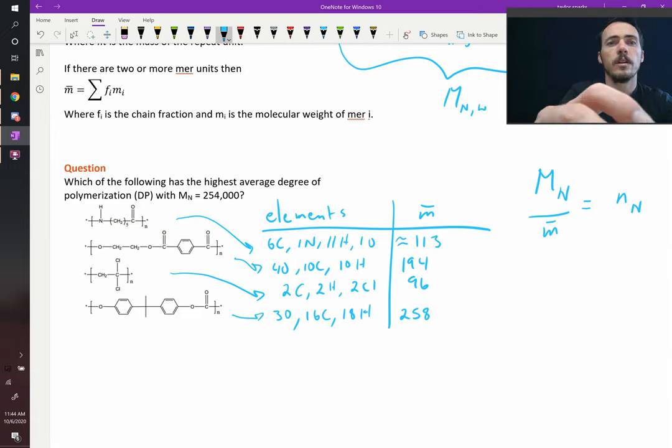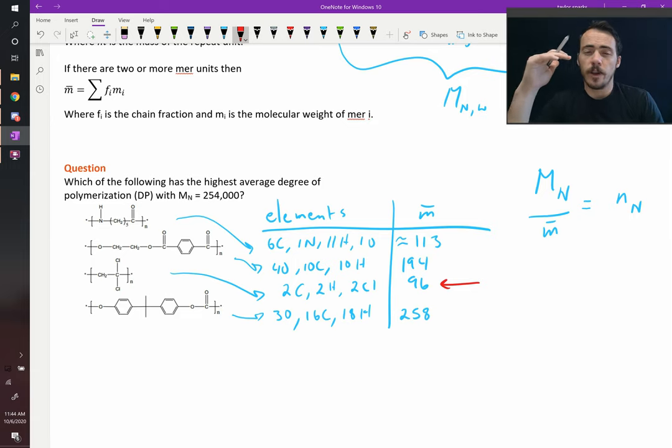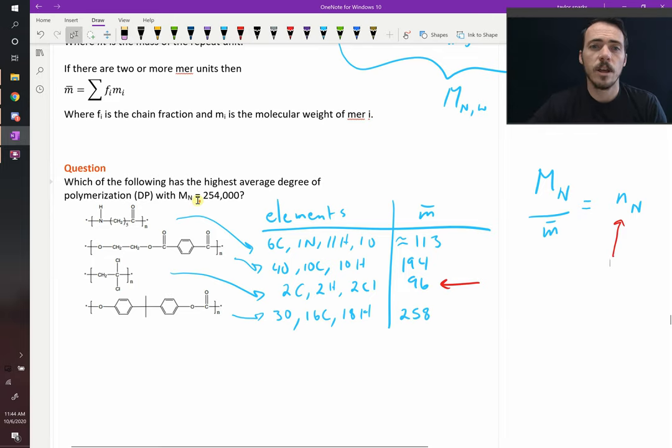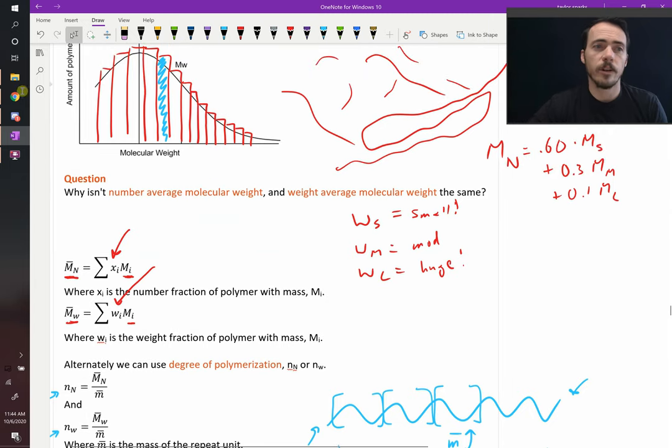So which one of those is the smallest? It is this one. Therefore, you'd be dividing a number, 254,000, by the smallest number that's going to give you the largest degree of polymerization. So it's about 100. So if you take 254,000 and divide it by 100, then the degree of polymerization is about 2500. So that's how you calculate degree of polymerization and molecular weight based off of number or weight average.